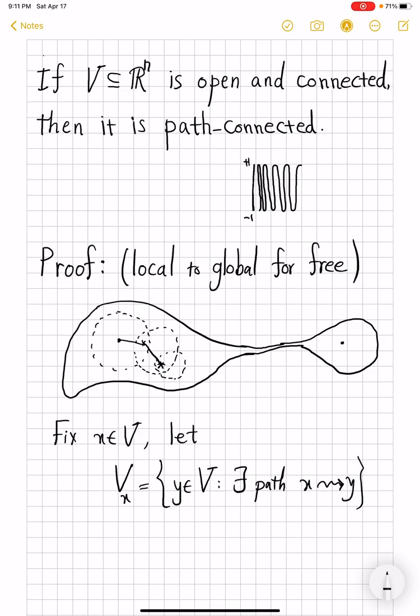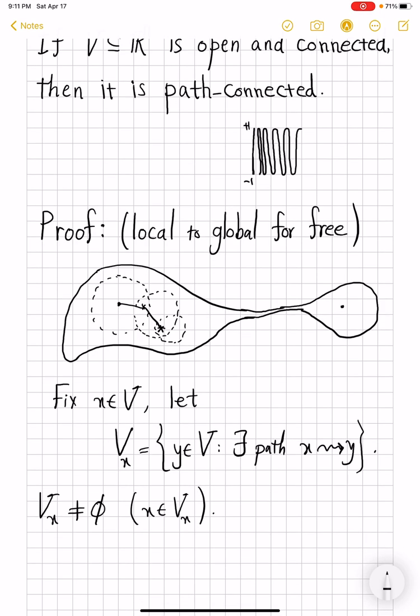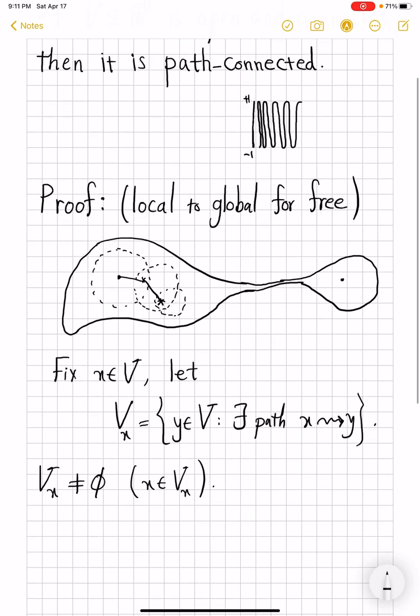Let me just adopt this wiggly notation of saying that there is some path from x to y. This set is not empty because x itself belongs to Vₓ. The next claim is that Vₓ is open.